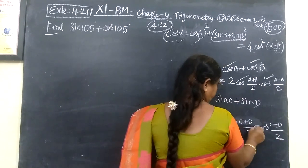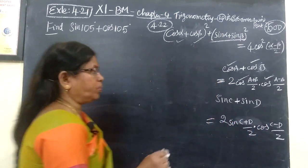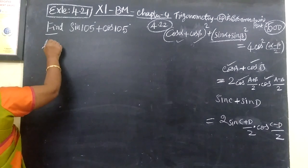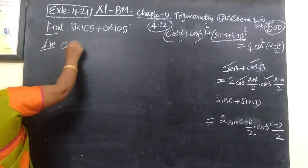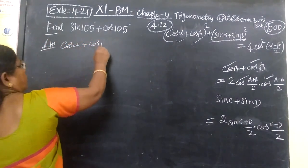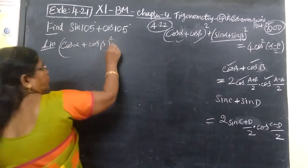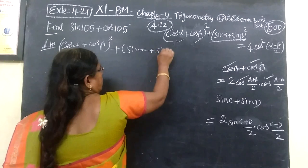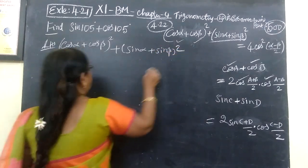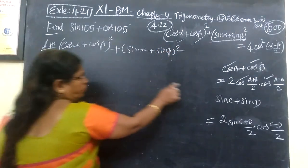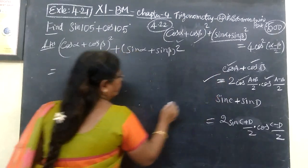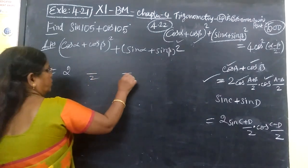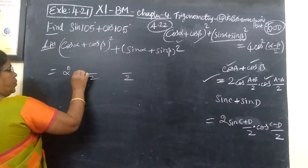So here is the plus bar, here is the product, here is the rules. Now consider LHS. LHS: here is cos alpha, cos beta whole square, then plus sin alpha, sin beta whole square. So this is equal to — here is the first formula, here is the formula, here is the 2 by 2, here is the cos bar, here is cos.